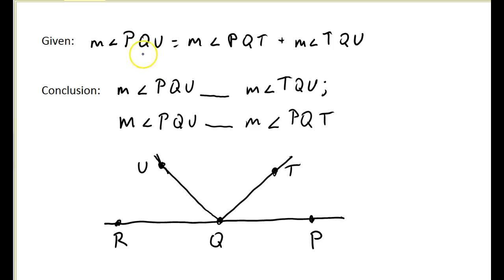How about this? The measure of angle PQU, so that's this angle right here, is equal to the measure of angle PQT, which is that one, plus the measure of TQU, which is this one. So what can we conclude?